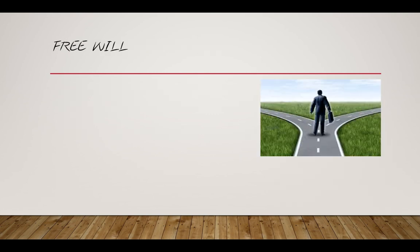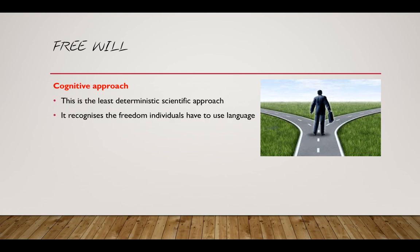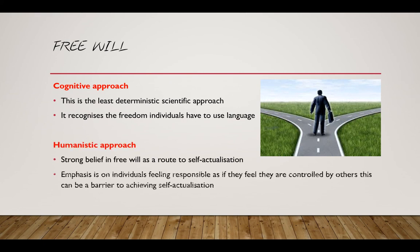There are two approaches that adopt the principle of free will. The cognitive approach is the least deterministic scientific approach, and recognises the freedom individuals have to use language, memory, and so forth. The humanistic approach has a strong belief in free will as a route to self-actualisation. There is a lot of emphasis on individuals' feelings, and the idea that feeling controlled by others is actually a barrier to achieving self-actualisation.